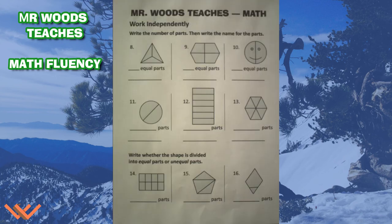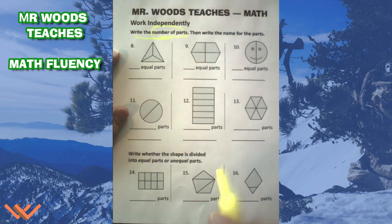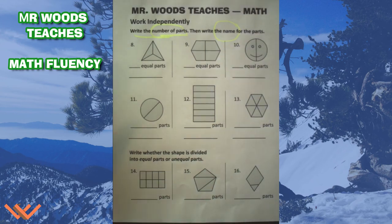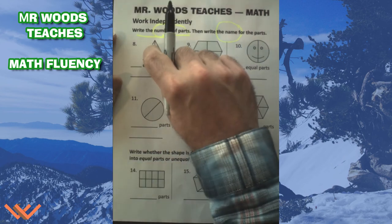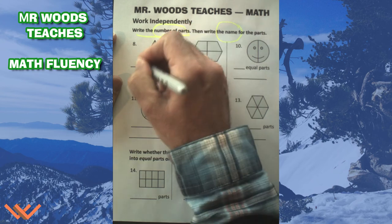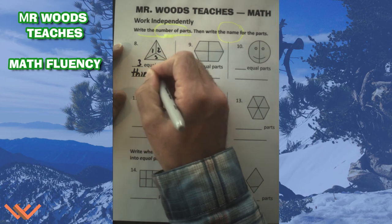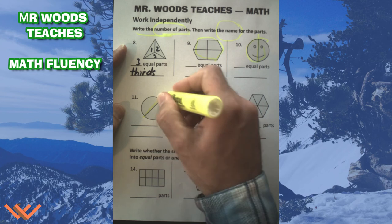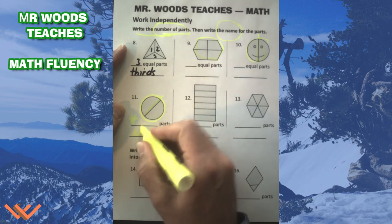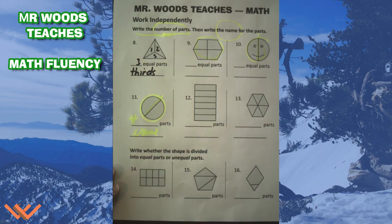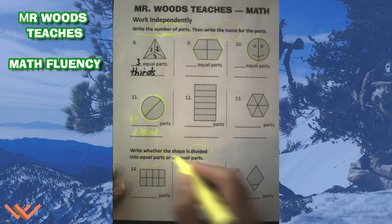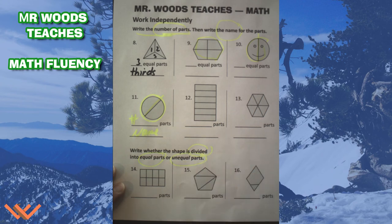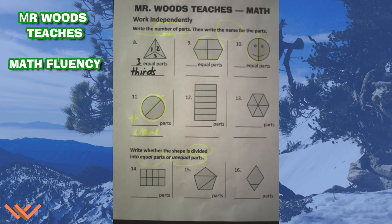I'm not going to give you too much help here — I'm just going to point out the obvious. When looking at this, read the directions: write the number of parts, then write the name for the parts. For example, number eight — we have one, two, three: three equal parts, and they are thirds. Pay attention to what the shape has. We're looking for the number and the name for those parts. Down here, we're looking for whether the shape is divided into equal or unequal parts — if the pieces are the same size, they're equal; if not, they're unequal.